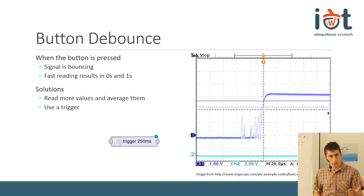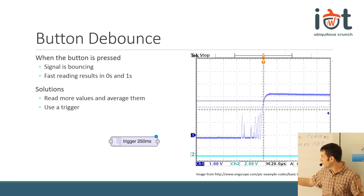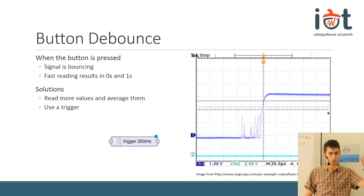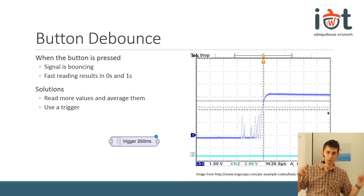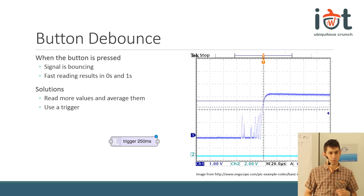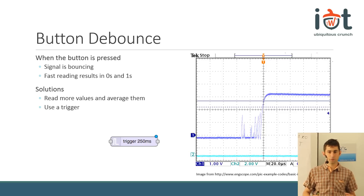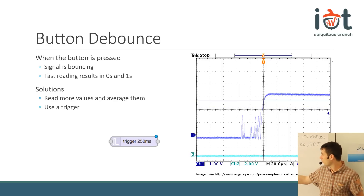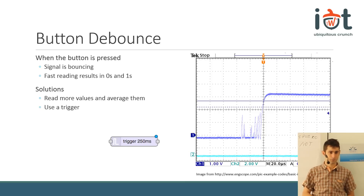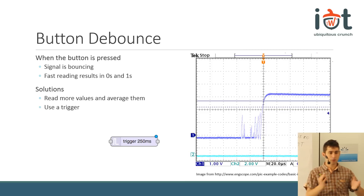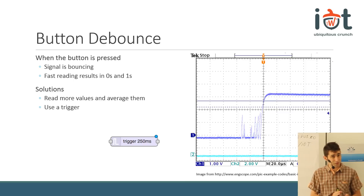The problem with bouncing is that the microcontroller samples continuously and sees zeros and ones changing. If you need to count how many times you press a button, you might count seven instead of one. One way of debouncing is to average the value, and if the average is not clearly zero or one, then the button bounced, so discard the measurement. Another hardware approach is a monostable circuit that detects an edge and then doesn't read another value for a certain amount of time.